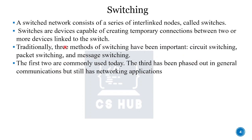Circuit switching and packet switching are the two commonly used types. Message switching is a third type, but it has been phased out in general communication. Circuit switching and packet switching are still widely used in networking applications, while message switching is almost phased out.